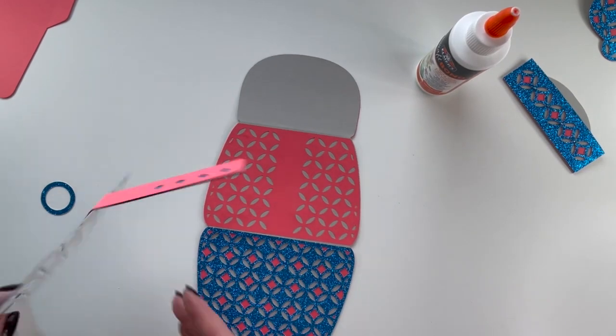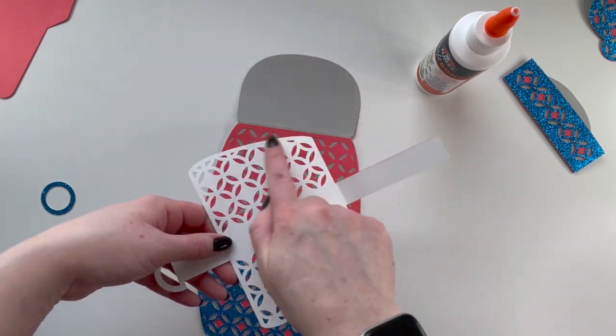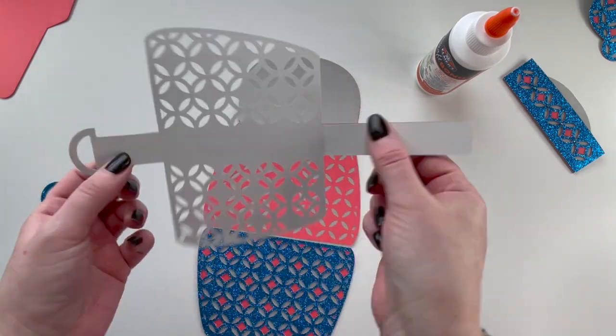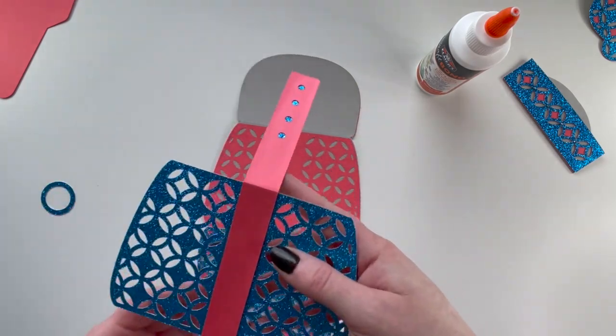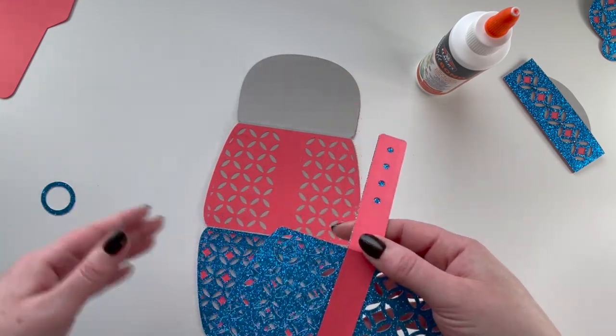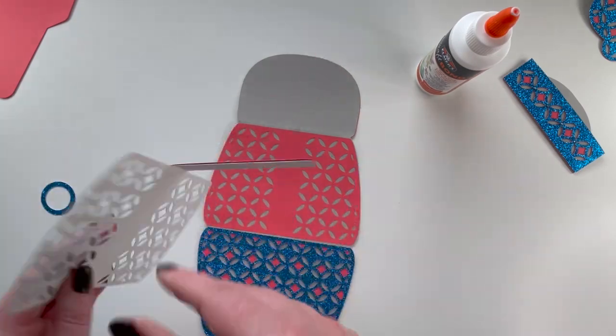One part before you glue this piece on: you're only gluing this part on, these pieces do not glue down. Okay? Leave them as a flap and then we'll go on to the next step and you'll see what I mean by not gluing them down.